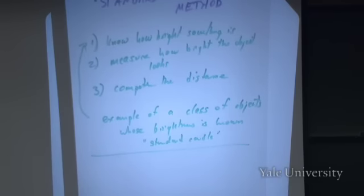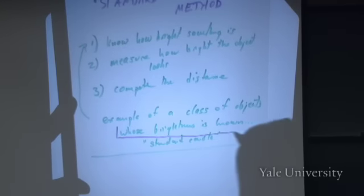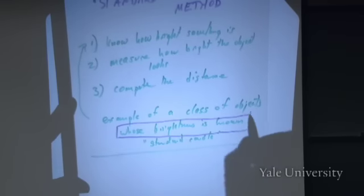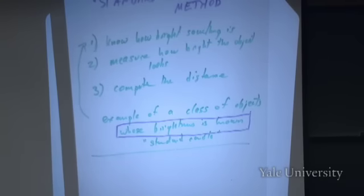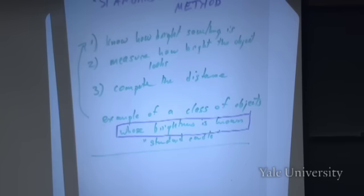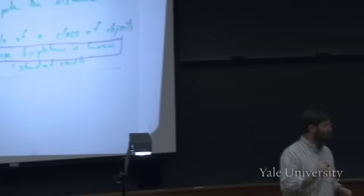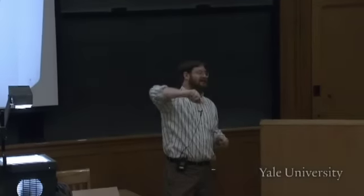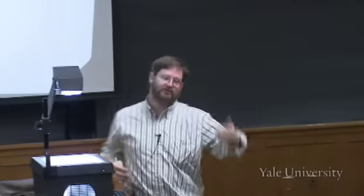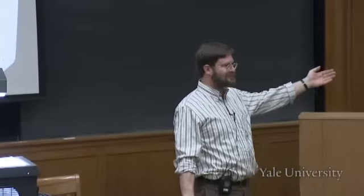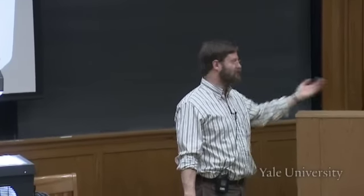The problem with this is if you get it wrong — if you make the wrong assumption about how bright these objects are — you're going to screw this up completely. And that's what Hubble did. Hubble was looking at a particular kind of bright star in which he thought he knew how bright it was, and he was wrong, so he got the wrong Hubble Constant. But because he used the same kind of star in all his galaxies, he got it the same amount wrong for all of them — they still lined up, just along the wrong track.